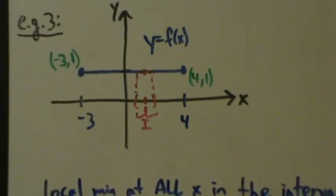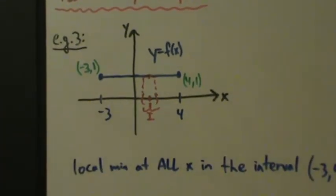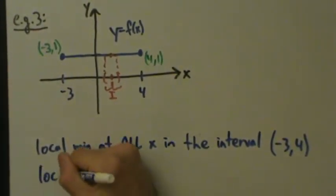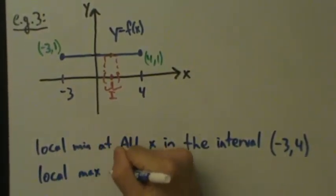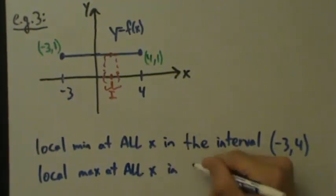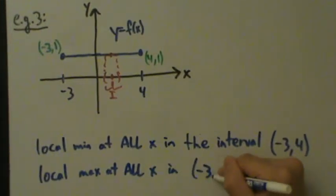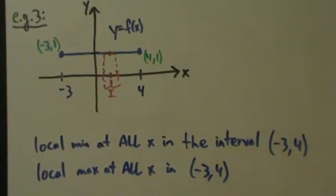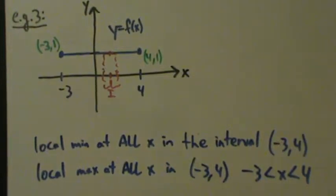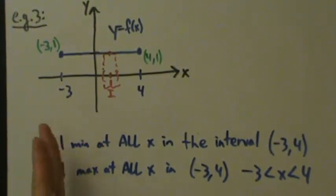The formal definition for local min and local max is satisfied here. So we have a local min at all the x in this interval. And because they're all equal, f of 1 is also greater than or equal to f of x for all other x values in the interval i, so we also have a local max at all x in the same open interval from negative 3 to 4.